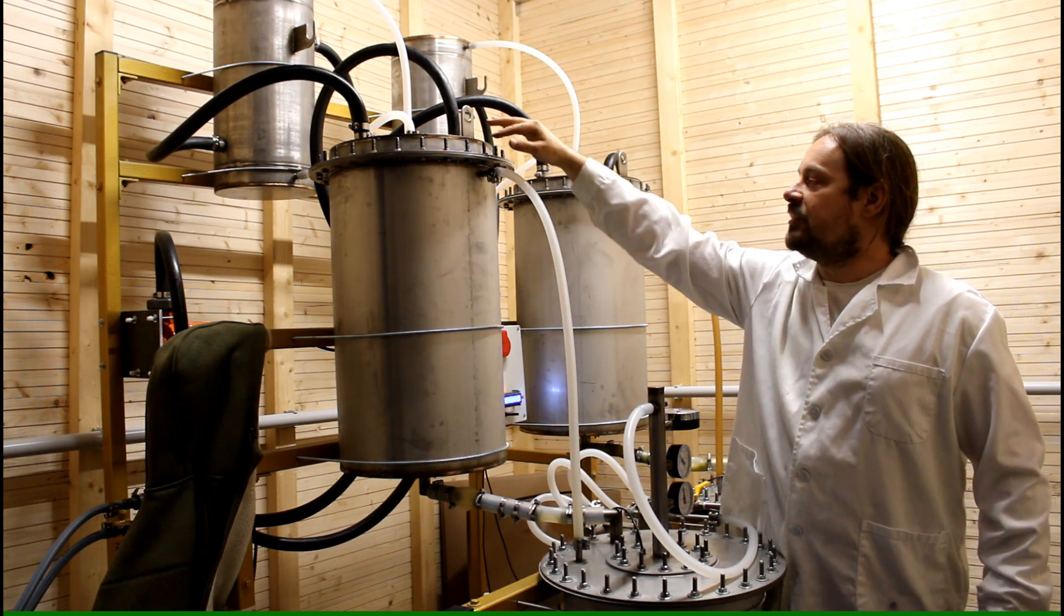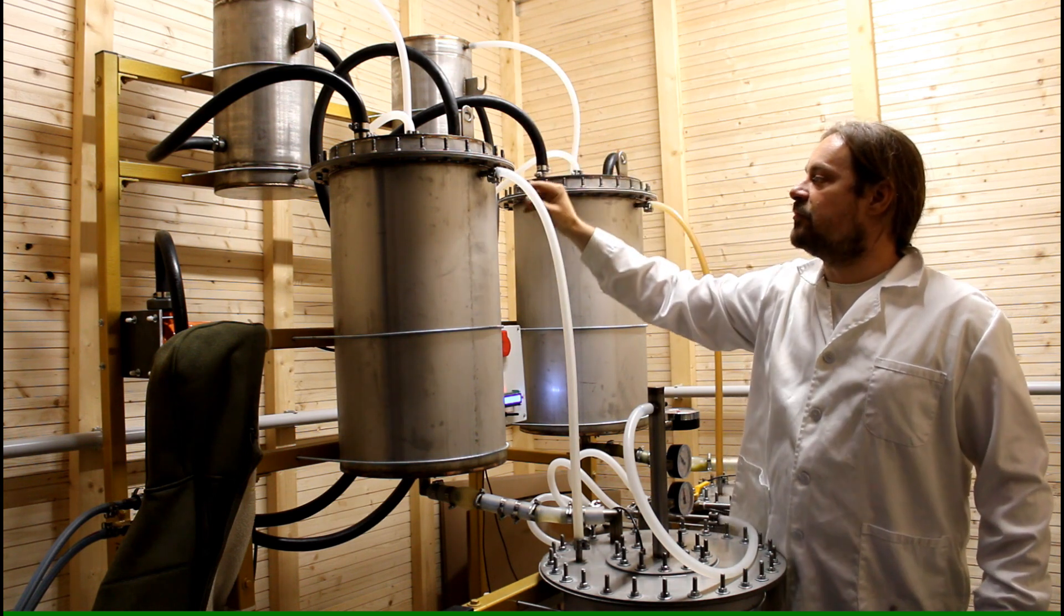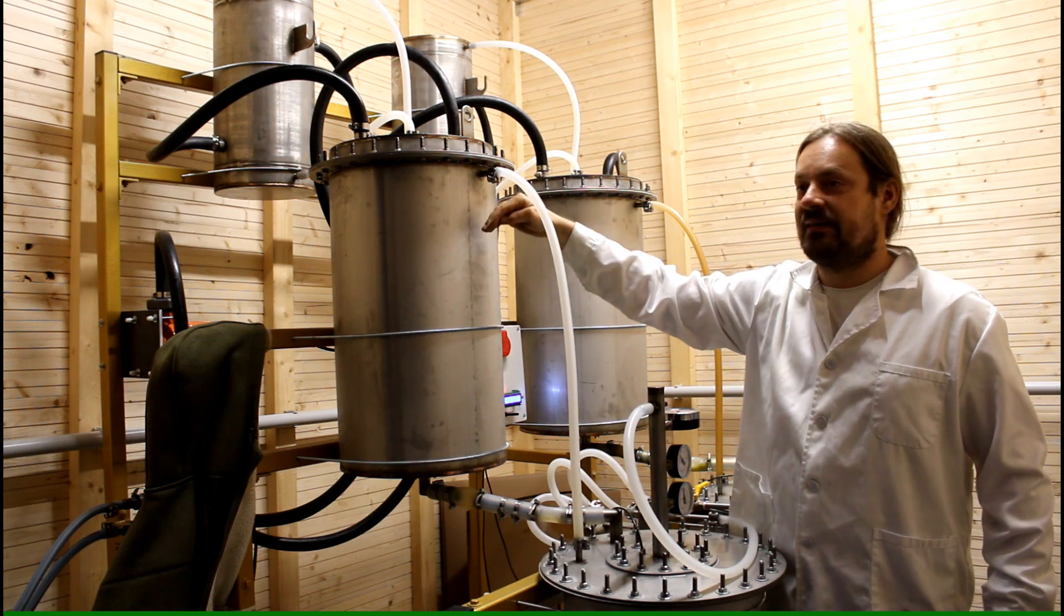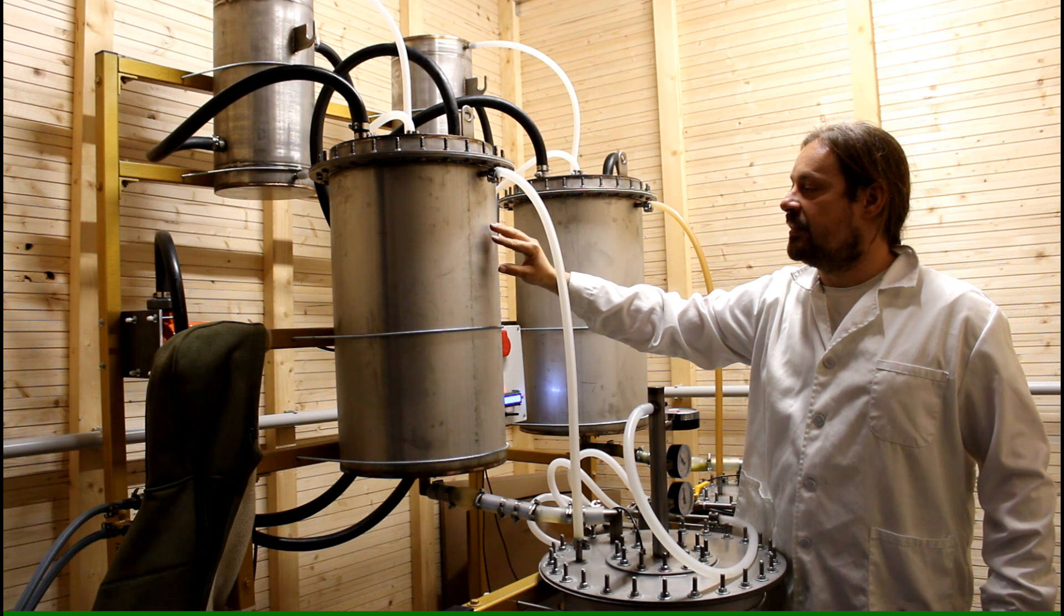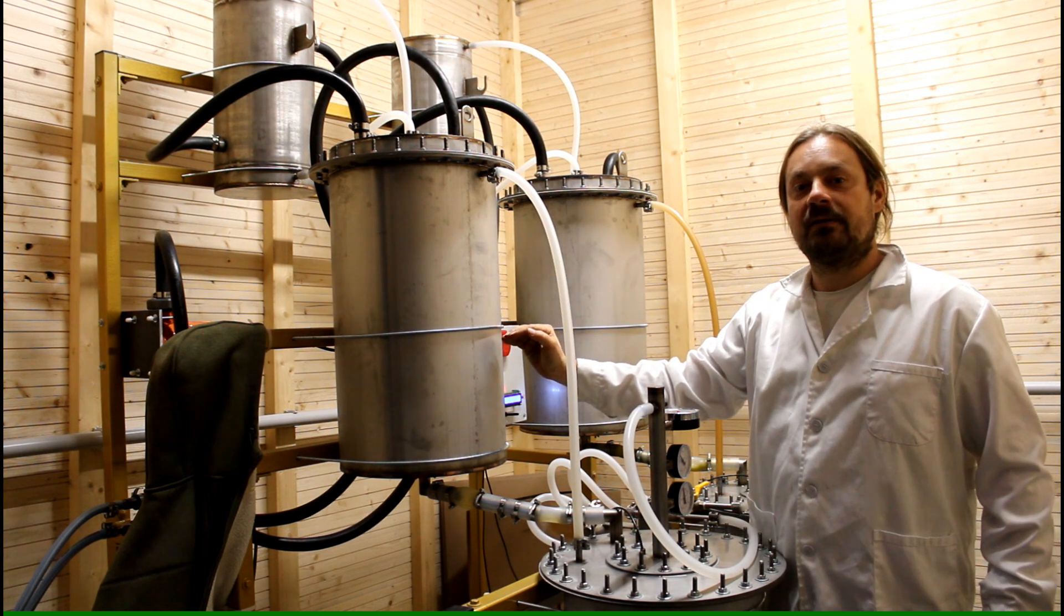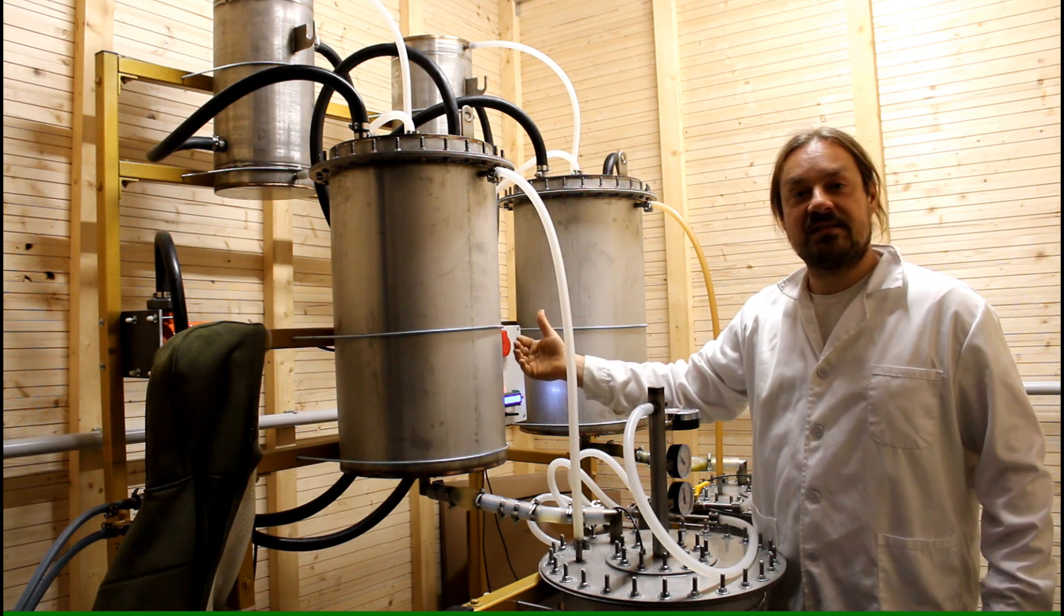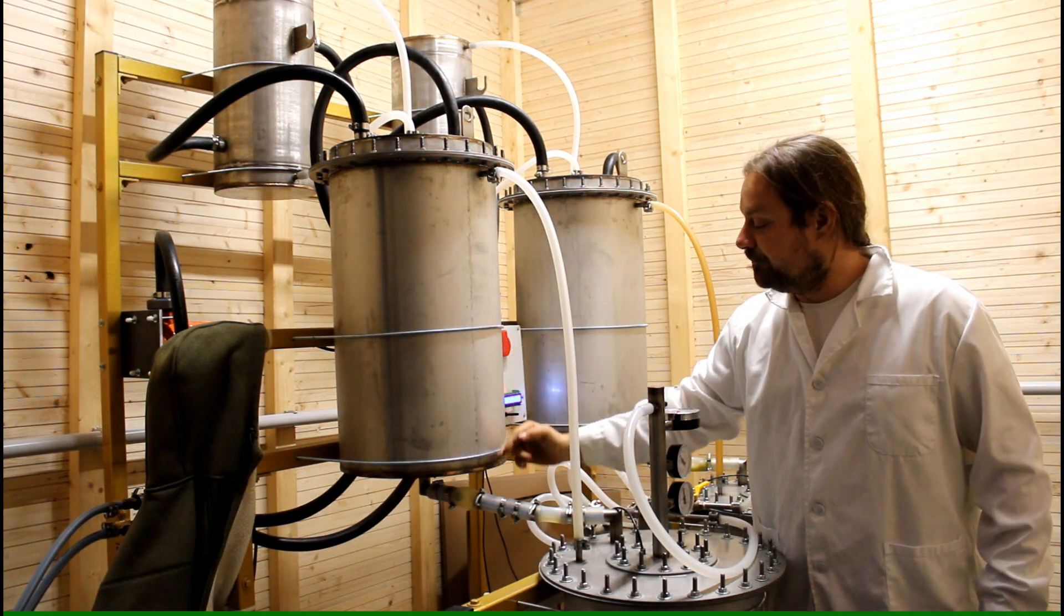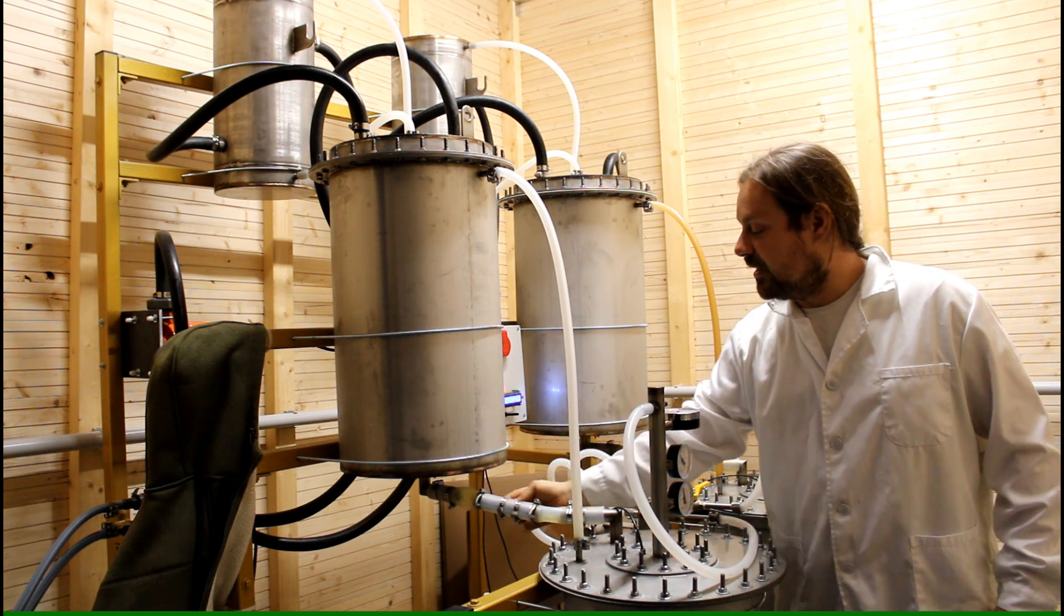All the liquid that condenses here and comes down from there will subsequently drop on the herbal matter and the solvent is running through the herbs. It will extract the substances of the herb and subsequently the extract will come down here and run in this vessel here.